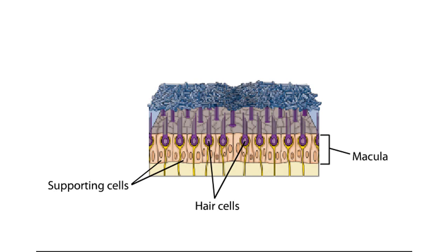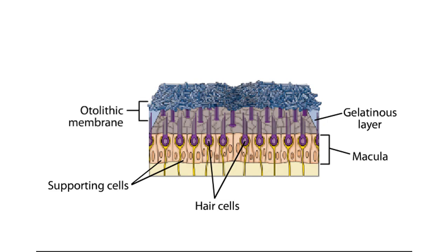Overlying the hair cells and their stereocilia is a gelatinous layer. Above this layer is a fibrous structure, the otolithic membrane, in which are embedded crystals of calcium carbonate called otoconia. The crystals give the otolith organs their name. Otolith is Greek for ear stones.